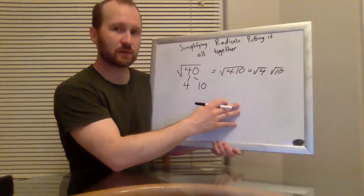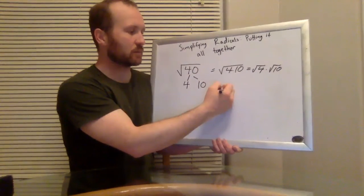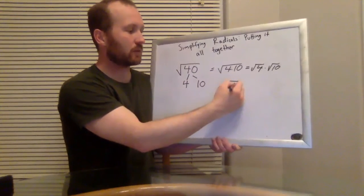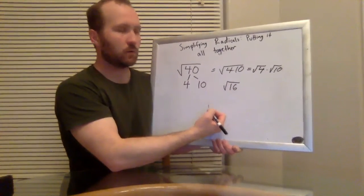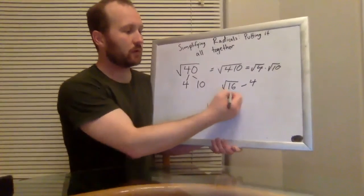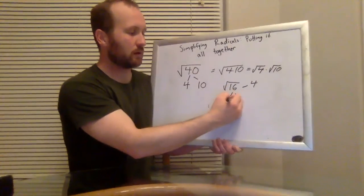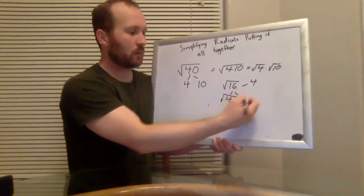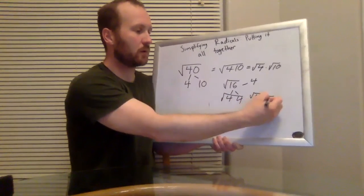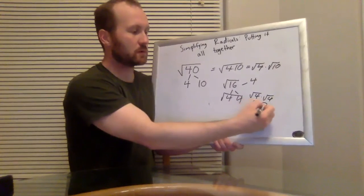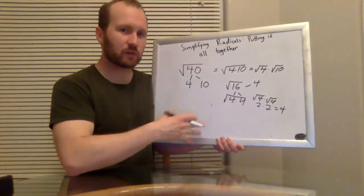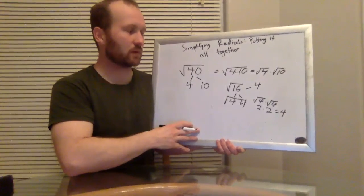Now, one way to kind of prove this to yourself would be to take a really simple example. Say something like, what is the square root of 16? Well, I already know the square root of 16, it's four. But another way of writing that would be four times four. Well, the square root of four times the square root of four would be two times two, which also equals four. So we can kind of prove it to ourselves by showing that it works in a really simple example.